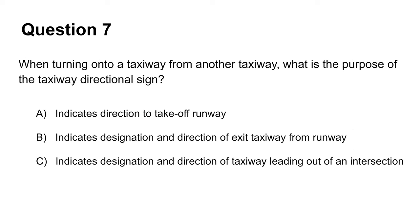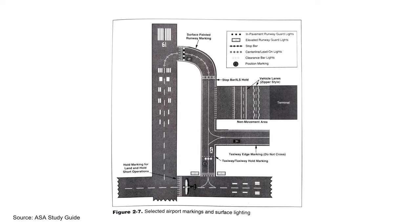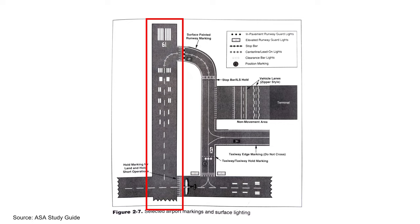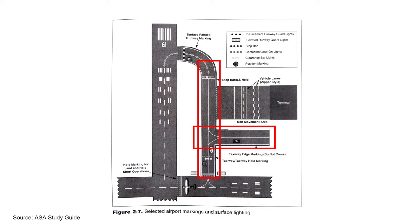The seventh question tests your knowledge of airport markings and signs. It asks about the purpose of the taxiway directional sign when turning onto a taxiway from another taxiway. Runways are paths from which aircraft take off, while taxiways are paths that connect runways with other airport facilities. Runway 19 has a white dashed centerline, and two intersecting taxiways are marked with solid yellow centerlines. One common fact to remember is that runway markings are typically in white, while taxiway markings are typically yellow. There is also a taxiway directional sign before the taxiway intersection, which shows the direction to taxiway A.